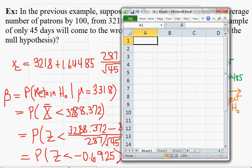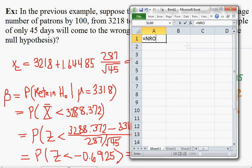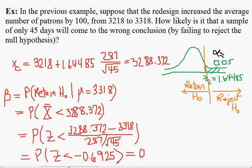And so using Excel, we get norm s dist of negative 0.6925 for a probability of about 24.43%. And so that is the probability of incorrectly retaining the null hypothesis, even though the alternative hypothesis is correct.